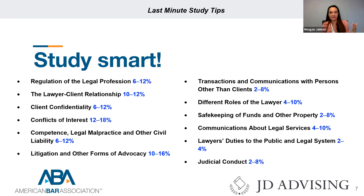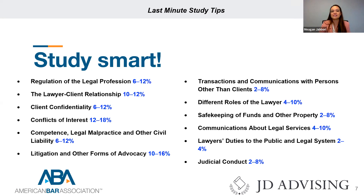Conflicts of interest is the most highly tested subsection, making up 12 to 18% of your total exam. If you're studying at the last minute, start here — you'll get a lot of bang for your buck because these rules appear most frequently. The lawyer-client relationship makes up 10 to 12% of your total exam, putting it roughly in third place. Litigation and other forms of advocacy is the second most highly tested topic, making up 10 to 16% of your exam. This information should help guide your remaining study time.